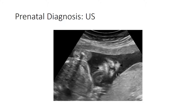Here is a coronal ultrasound image in a fetus at 22 weeks of gestation showing a unilateral cleft lip. You can see the lower lip, the upper lip with the cleft on the left side, and the nose with two nostrils. The cleft goes all the way up into the nose, likely representing a complete unilateral cleft.